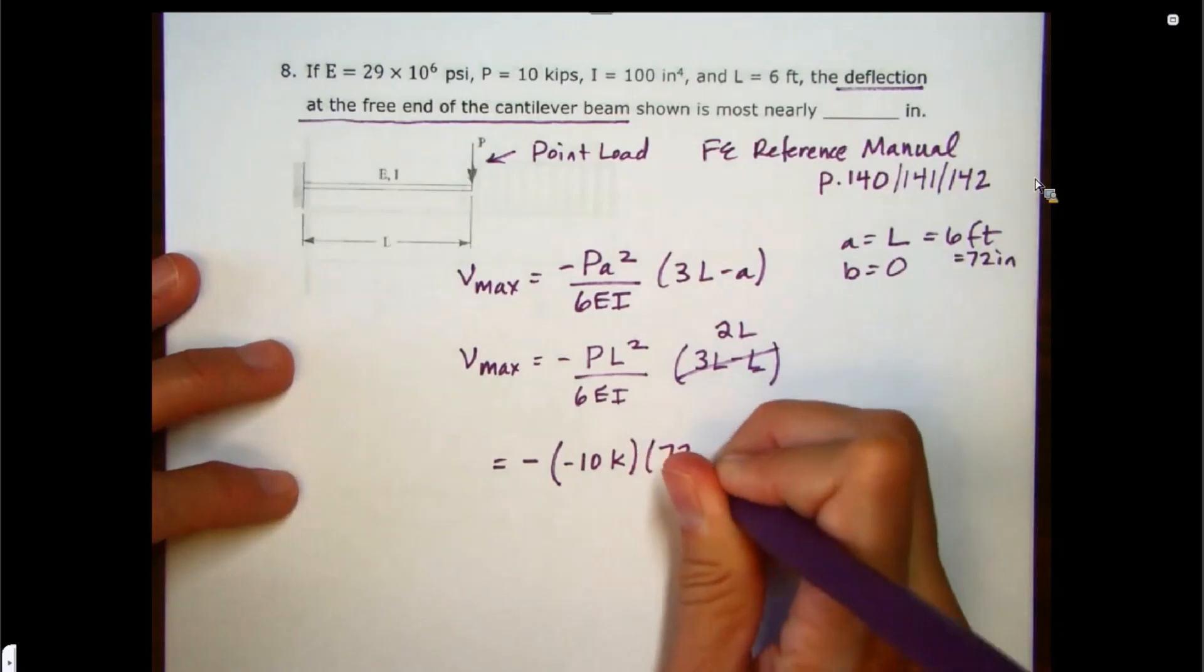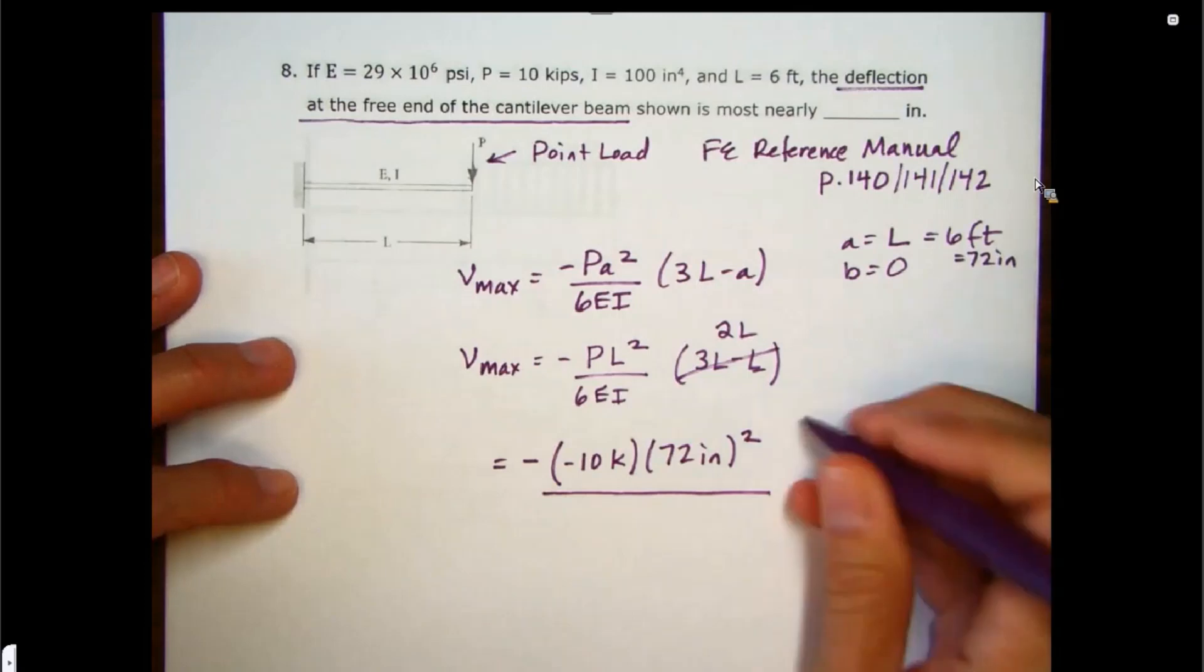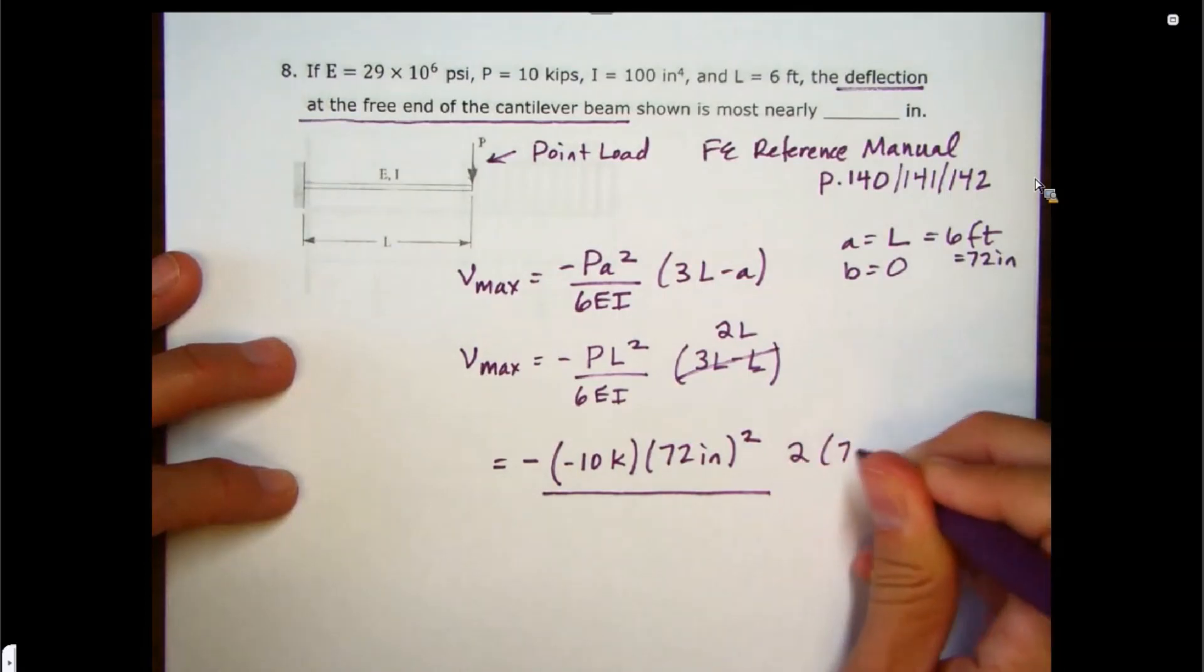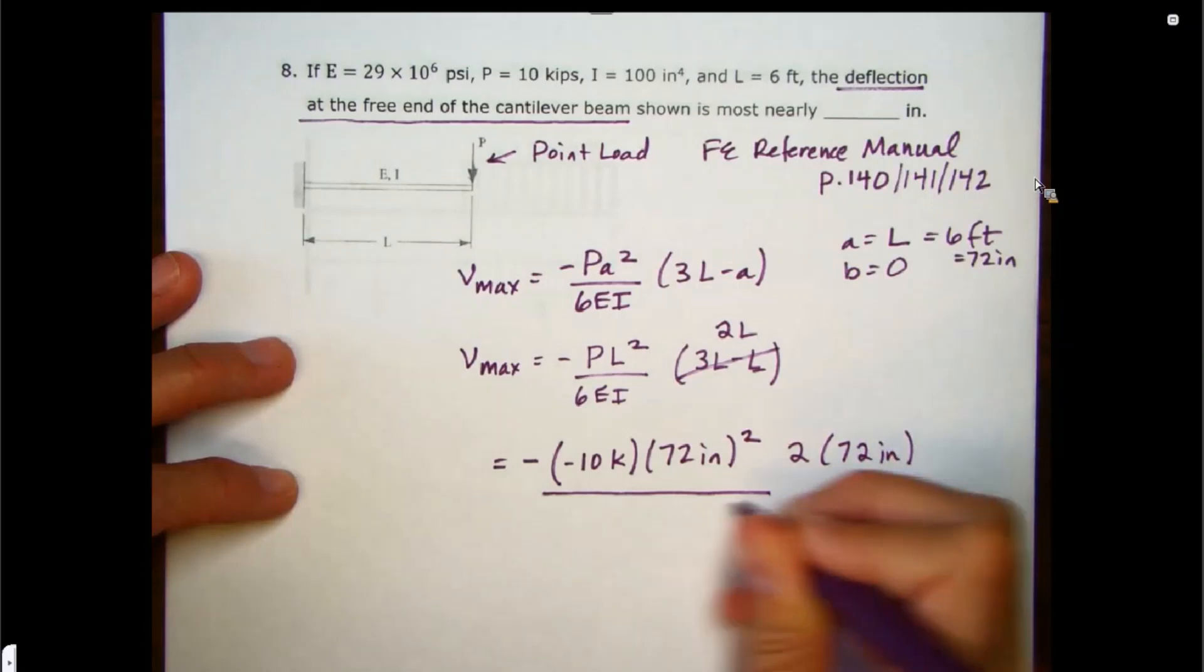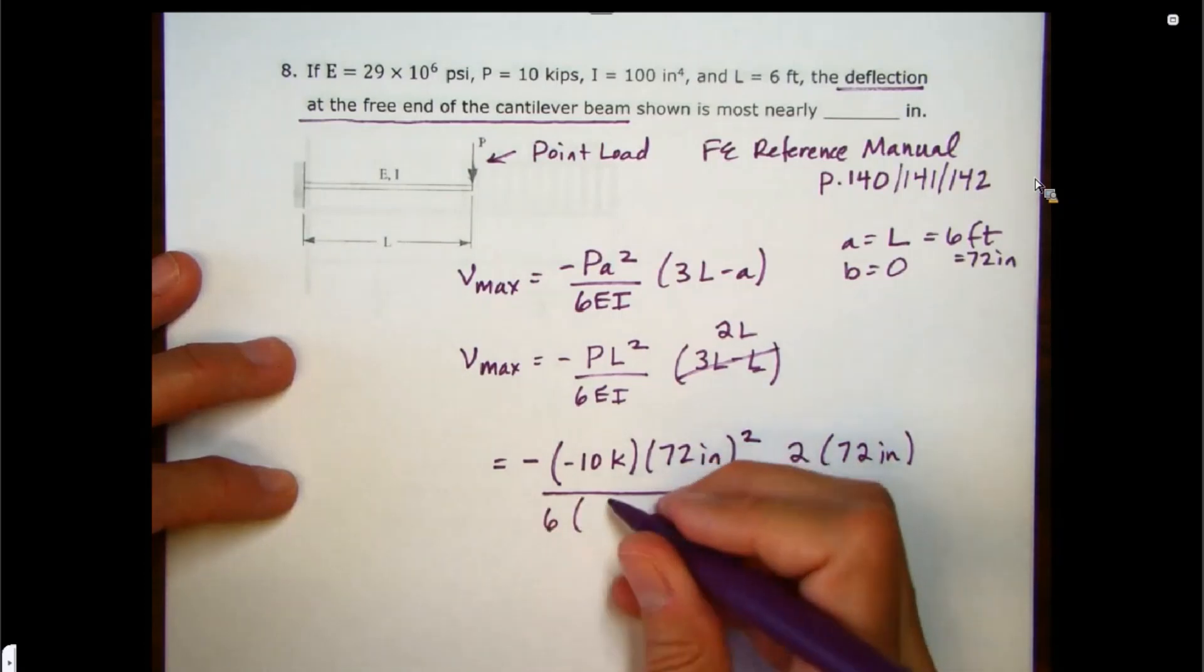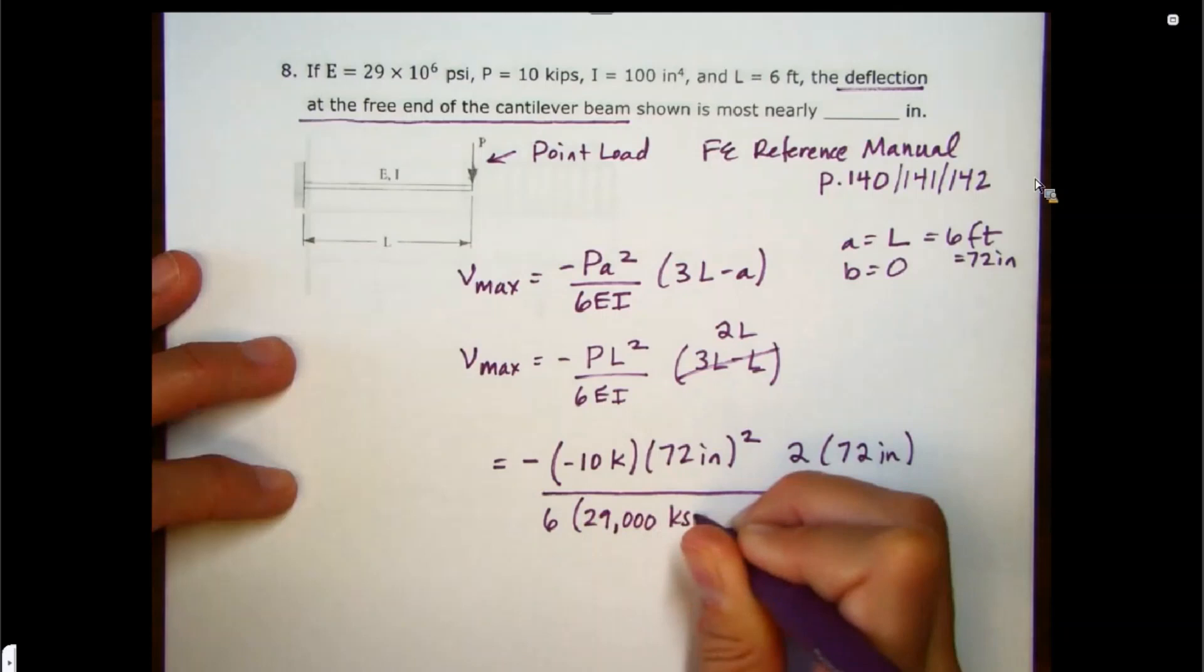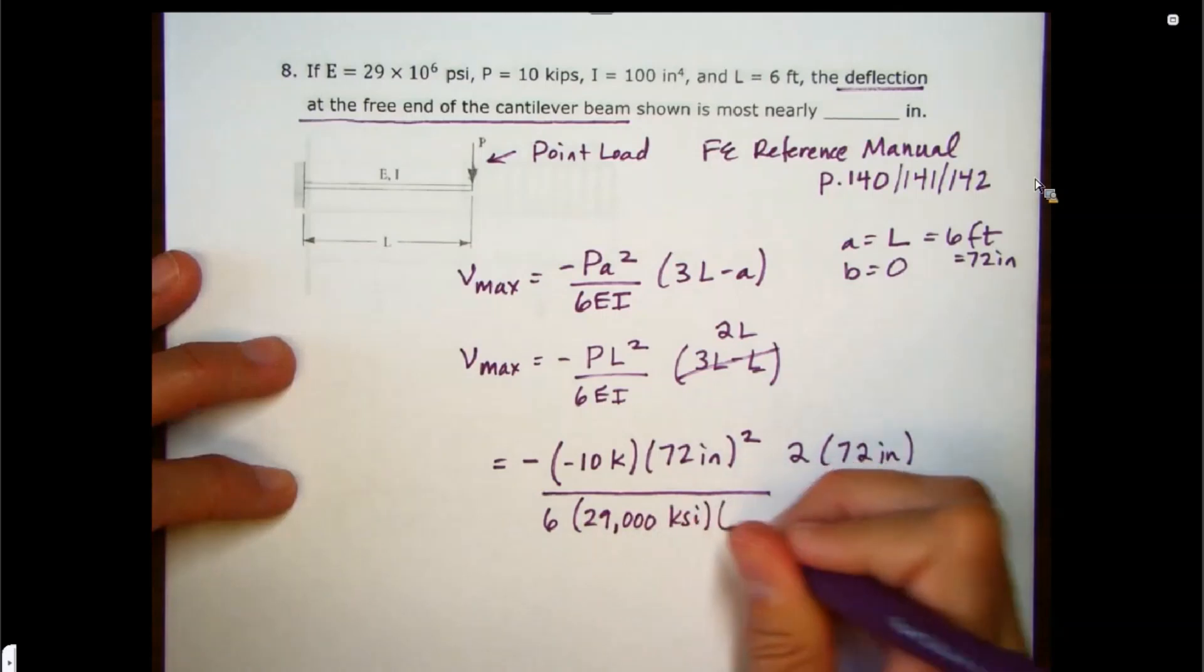And we have our 72 inches squared. And then also 2 times 72 inches. And then this is all over 6 times, I'm just going to use this in KSI, 29,000 KSI times 100 inches to the fourth.